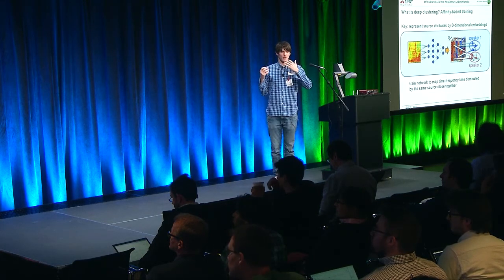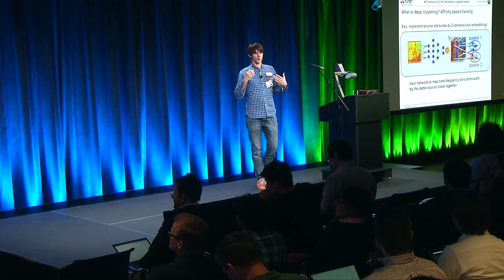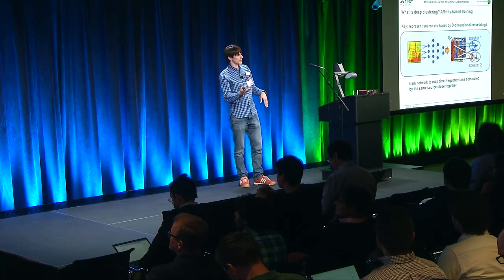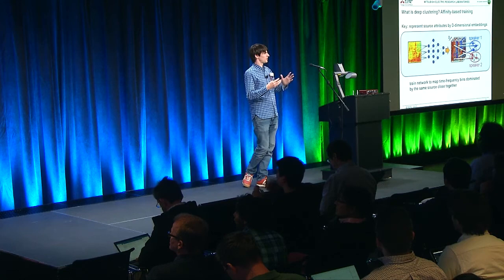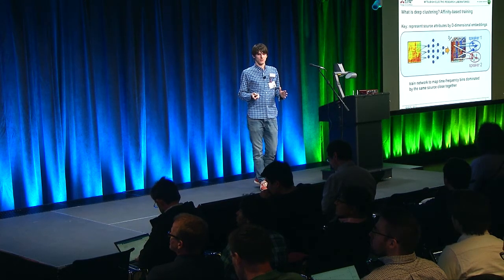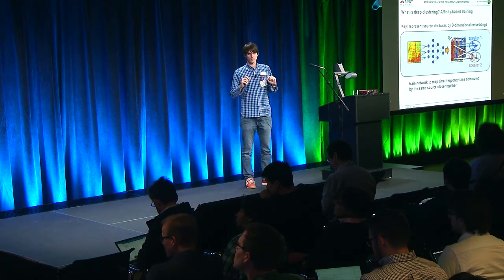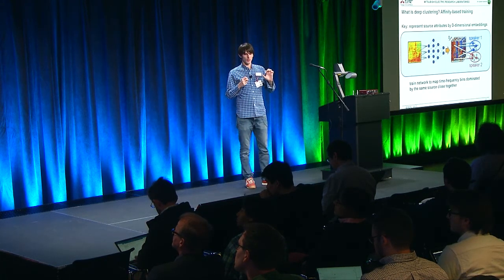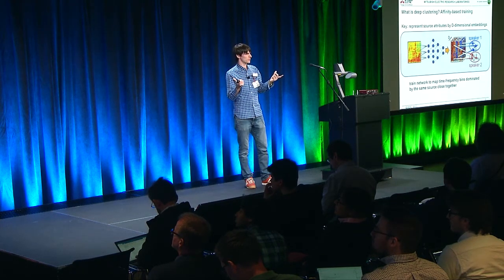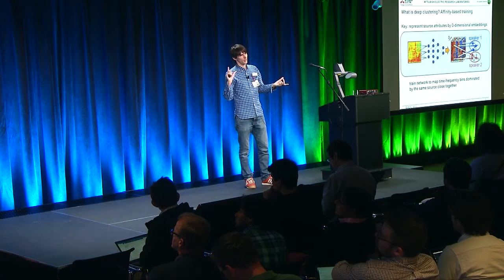So what is our approach to this problem? It's called deep clustering. The idea is that it's affinity-based training instead of training a neural network to classify each time-frequency bin — saying, is it dominated by speech or by noise, for example. When it's speech versus speech, it's maybe not as obvious how you do classification. So instead of doing classification, we train the network to generate d-dimensional embedding vectors, and the network tries to come up with embeddings such that for each pair of time-frequency bins, if they are both dominated by the same source, those embedding vectors will be close to each other, and if they're dominated by different sources, they will not be close to each other.